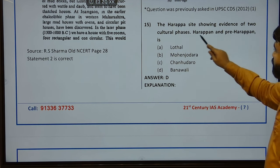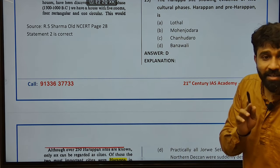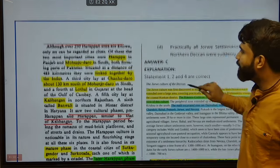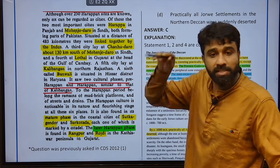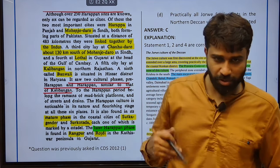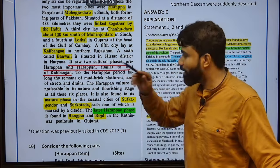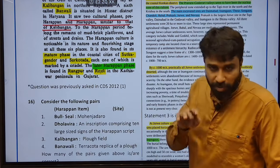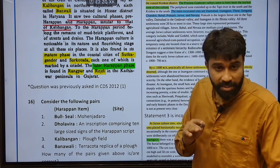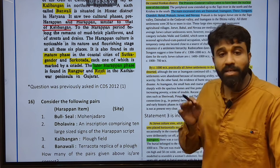The Harappan site showing evidence of two cultural phases — pre-Harappan and Harappan — include Banwali and Kalibangan. Both had shown these two cultural phases. Out of 250 Harappan sites, only six were large cities in Punjab and Sindh — Harappa and Mohenjodaro respectively. Later two more cities: Kalibangan and Banwali. Mature phase sites are Surkotada and Surkha Toda. Later phase Harappan sites include Rangapur and Roshdi, located in the Kathiawar Peninsula of Gujarat.